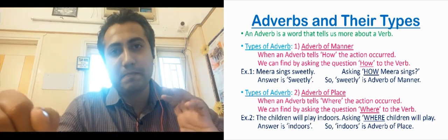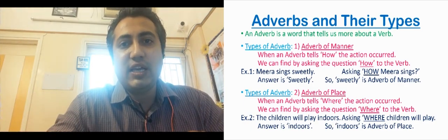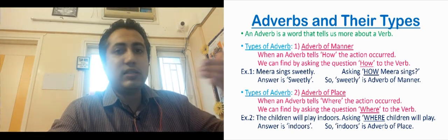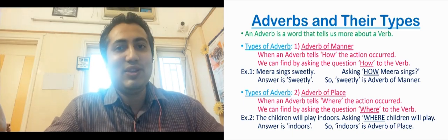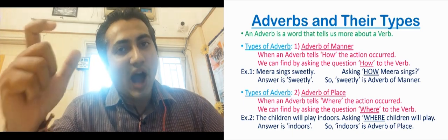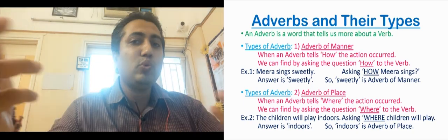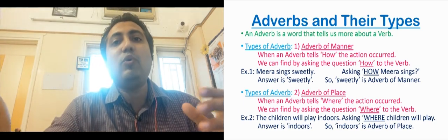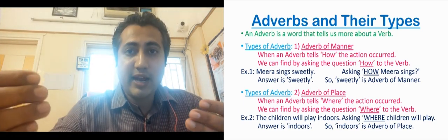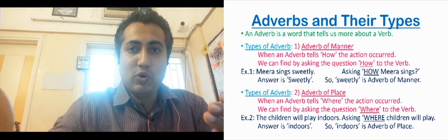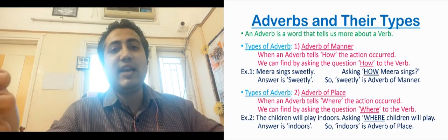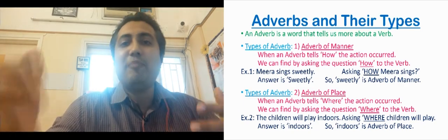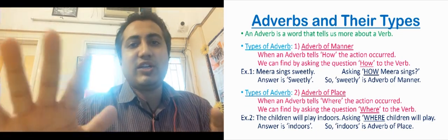Example: Meera sings sweetly. What is the action done here? Sings. Now we ask the question how — Meera sings how? Sweetly. So we get the answer for how. Here sweetly is an adverb, and what type? Adverb of manner. So if we get the answer for how when we ask it to the verb, then it is an adverb of manner. Adverb of manner tells how the action is done.